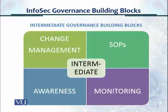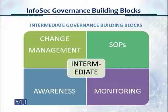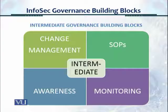The second phase in information security governance is the intermediate governance building blocks. First of all, there's change management. Now the controls have already been identified, so we need a mature change management process because we are trying to make the responses of information technology and the outcomes predictable. We're going to control change, and change management is a complete process.